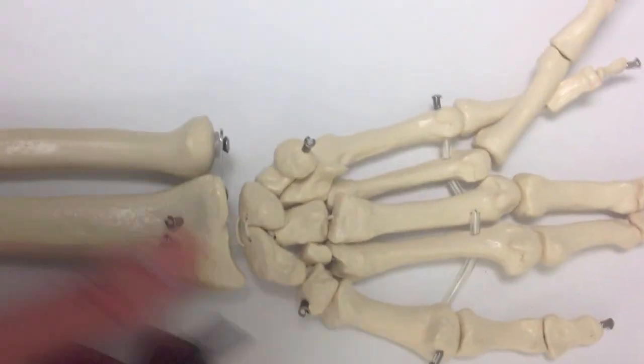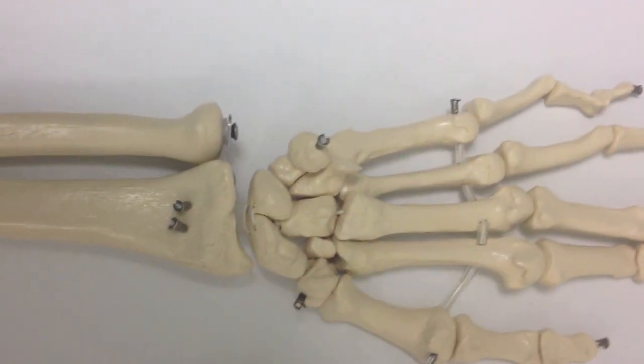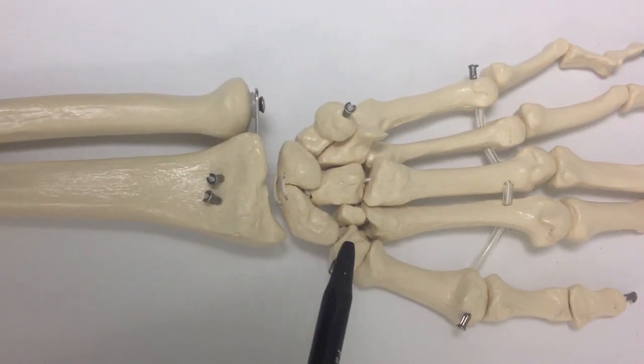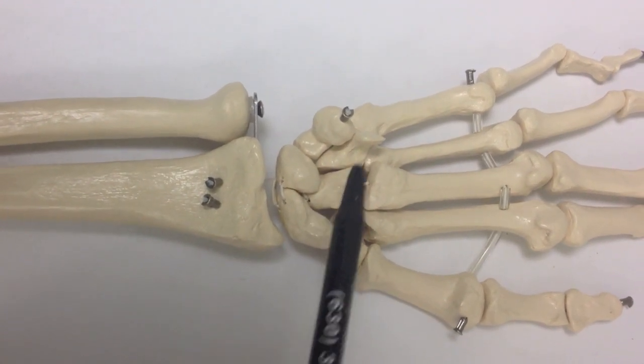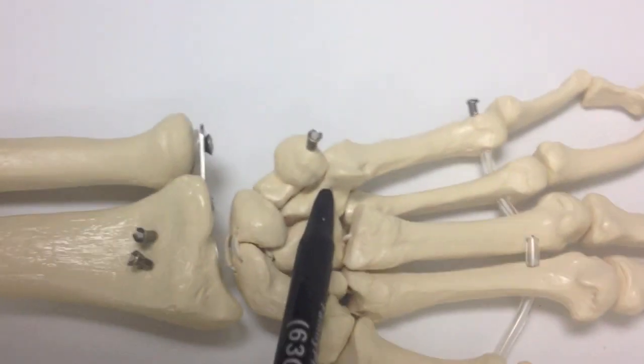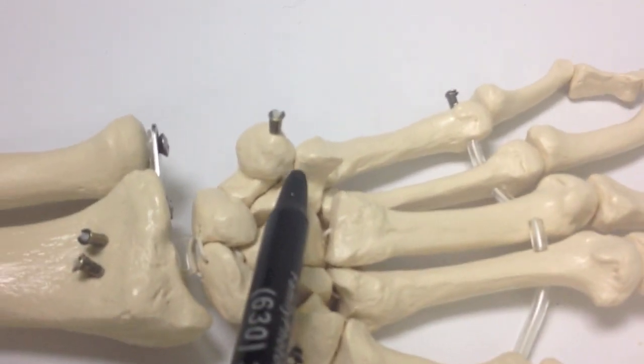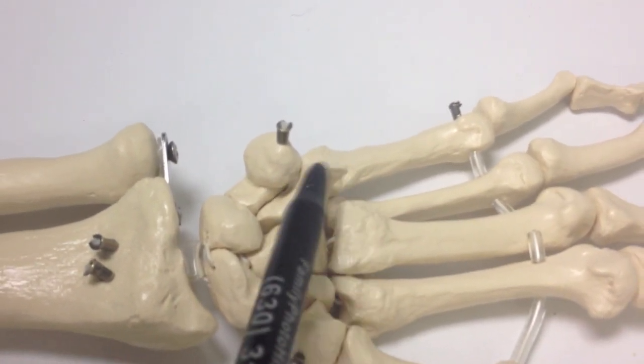And then we'll look for the thumb again, so we'll start with the trapezium, trapezoid, capitate, and hamate. And you can see on the anterior side, this is how hamate gets its name because it has a little hammer-like projection off of the top.